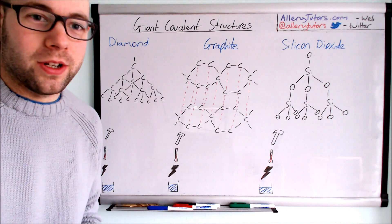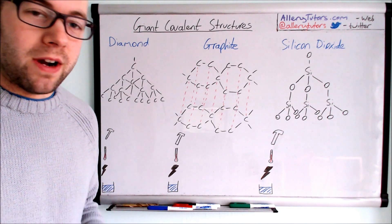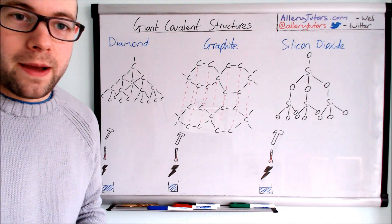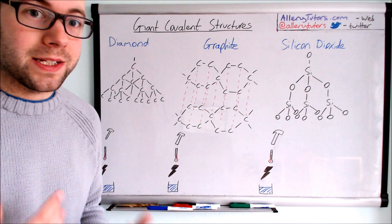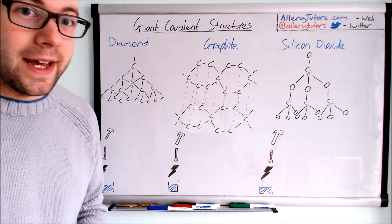In this video we're going to look at three examples of giant covalent structures: diamond, graphite, and silicon dioxide. We'll examine the basic properties of each and explain them to help you grab all the marks in your edible chemistry exam.